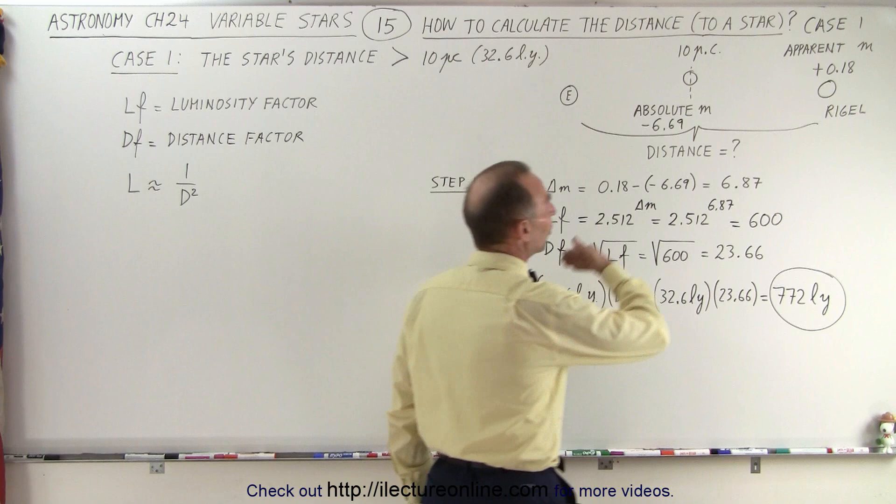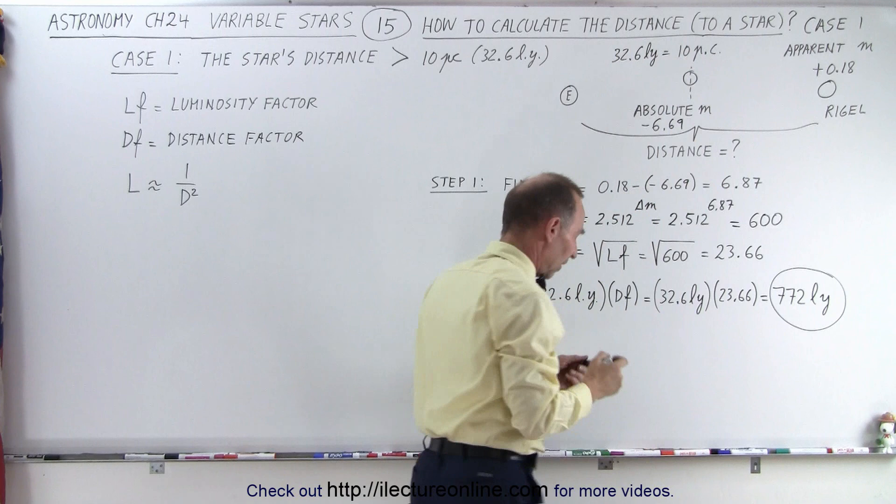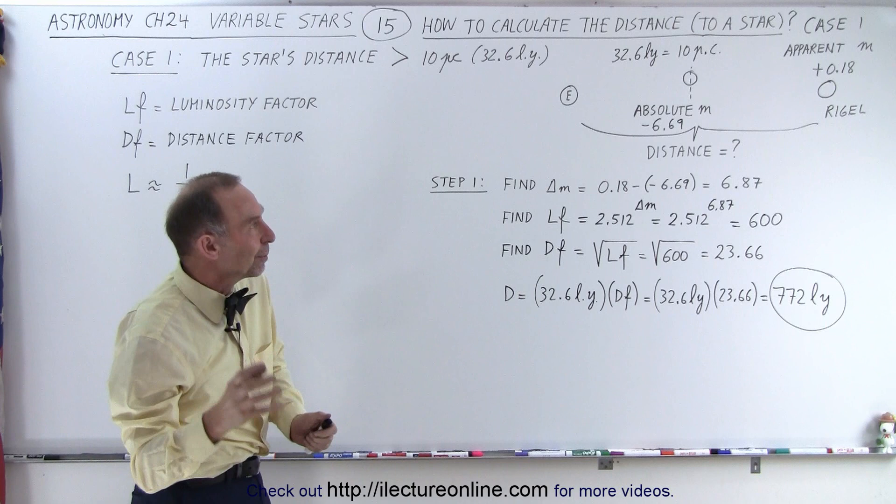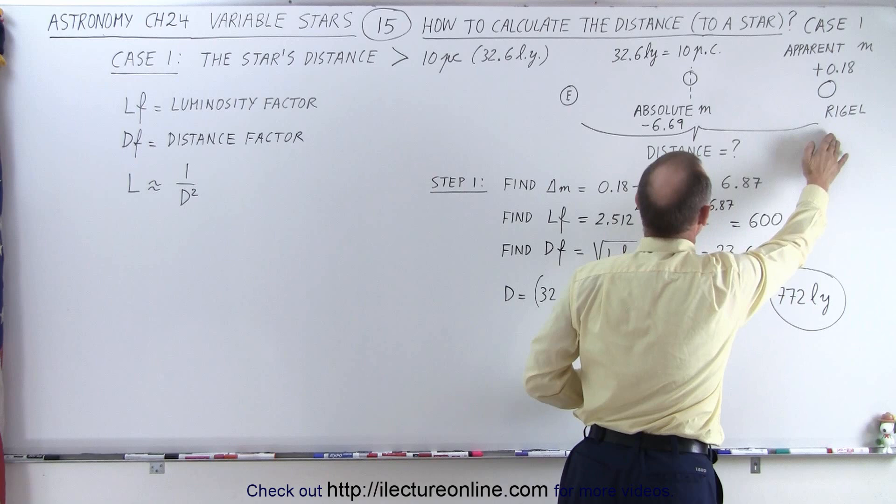The first case that we're going to take is when a star is farther away than our standard distance of 10 parsecs or 32.6 light years. The absolute magnitude is how bright it would appear if we place the star at the distance of 10 parsecs. And the apparent magnitude is how bright it appears where it actually is.